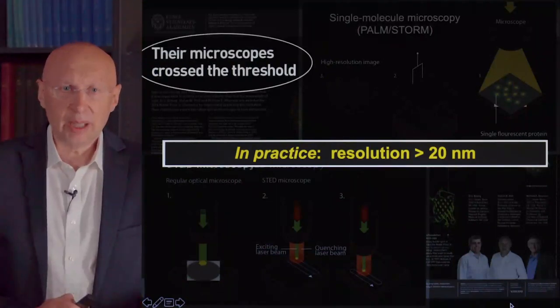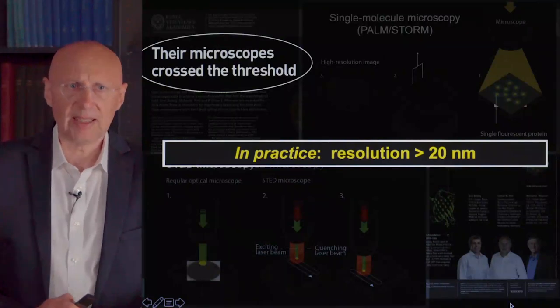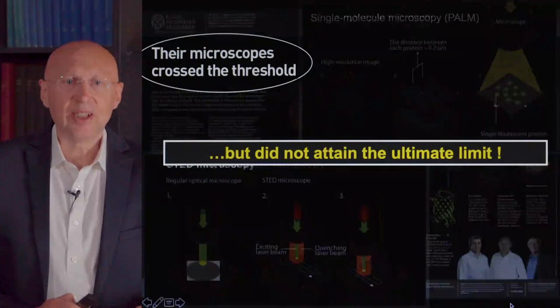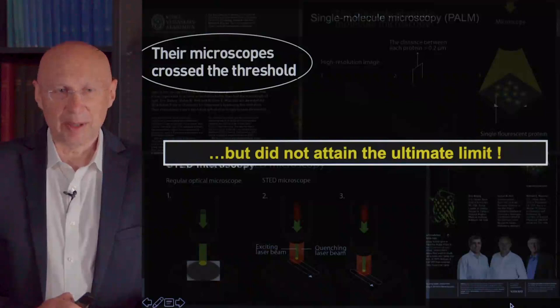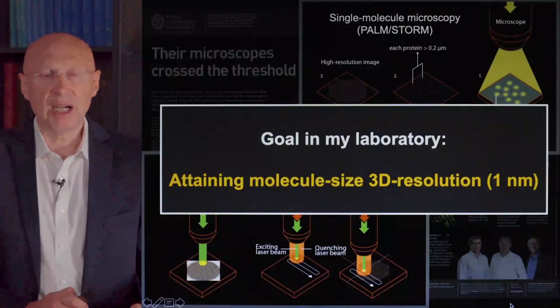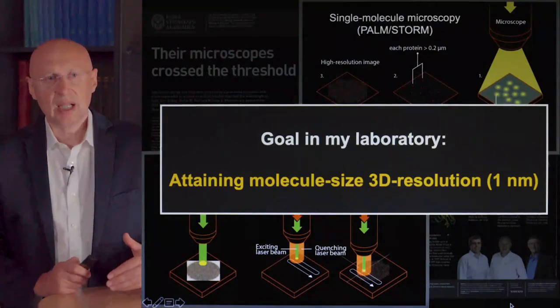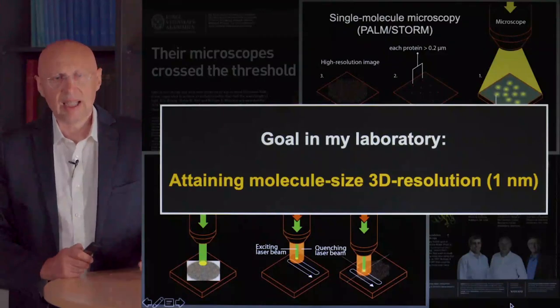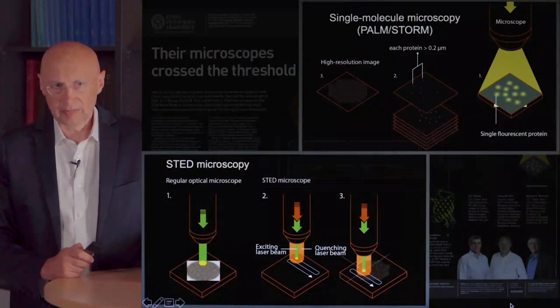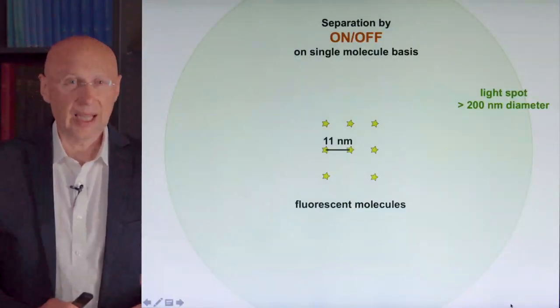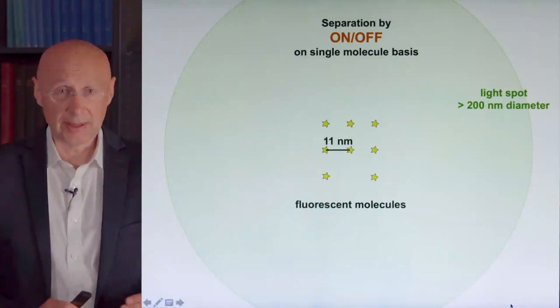The Nobel Foundation put it quite nicely: the laureates' microscope crossed the threshold, but it did not attain the ultimate limit. That is what I am addressing now. A major goal in my research lab during the last 5 to 7 years was to attain a resolution that is truly at the molecular scale — down to about the size of a molecule itself. To explain how one could get there, one needs a thorough understanding of how super-resolution technology works. The basic principle of separation is the on-off principle.